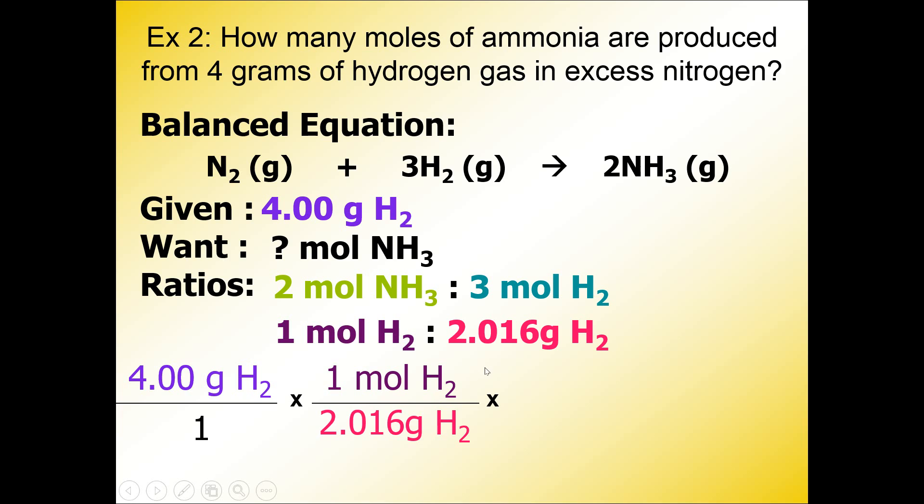I can continue on with the problem, and I want to make sure that moles of H2 cancel out with moles of H2, and I'm going to take this 3 moles of H2 and put it diagonal, and the rest of the ratio is going to go on top, 2 moles of NH3. Check that off because I've now used both ratios.